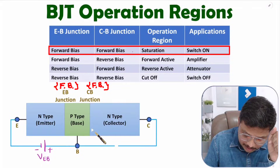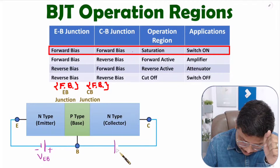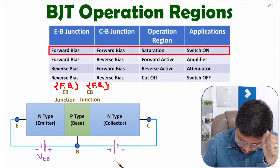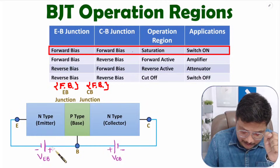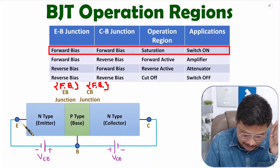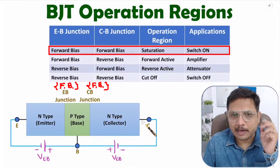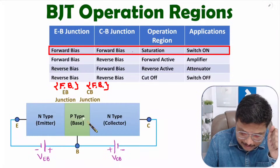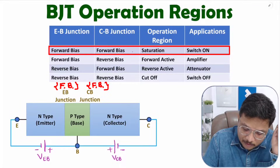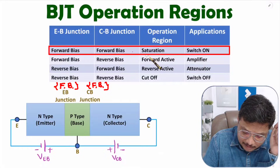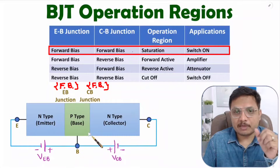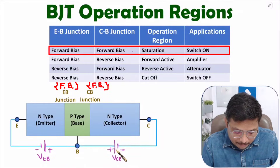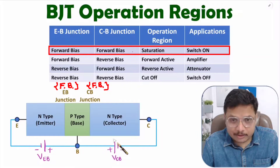To keep the collector-base junction in forward bias, the P type should be connected with the positive terminal of the battery and the N type collector with the negative terminal. By this VCB battery we can keep the collector-base junction in forward bias. As both junctions are in forward bias, current can easily flow between emitter and collector — meaning this transistor can be used as switch ON. To have the transistor switch ON, we keep BJT in saturation mode.